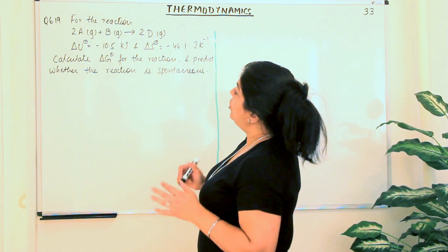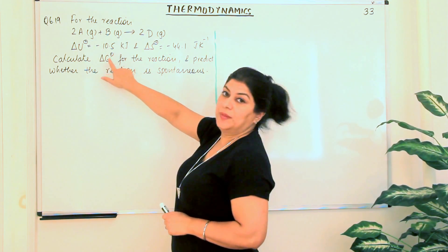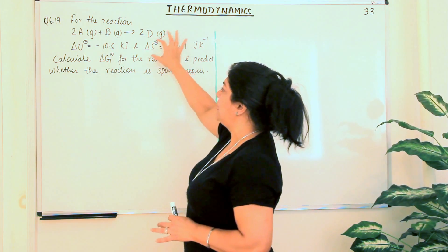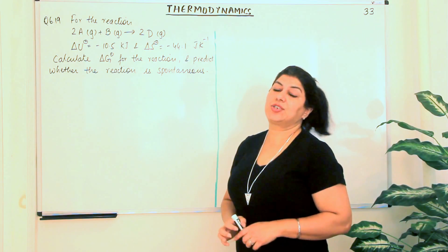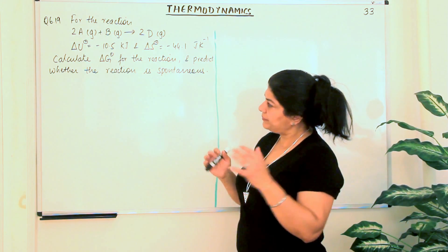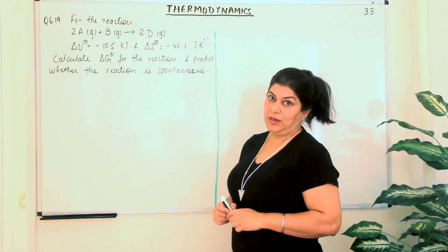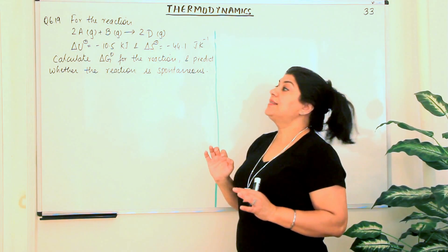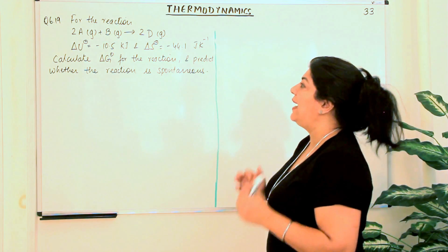You have to calculate the change in free energy, delta G⁰, under these same conditions for the reaction, and predict whether the reaction is spontaneous. Now what are we supposed to find out? We are supposed to find out delta G.